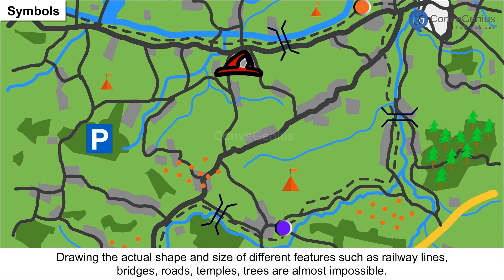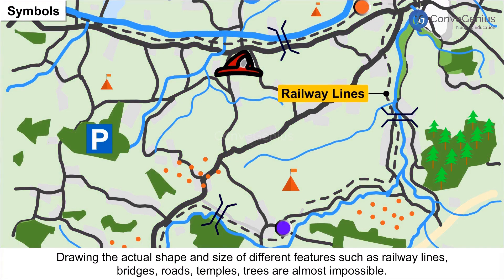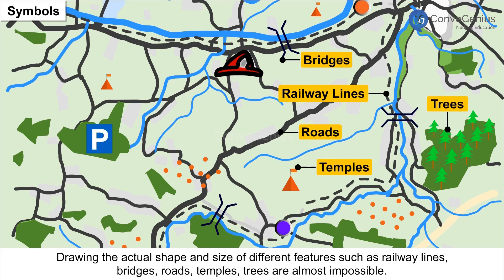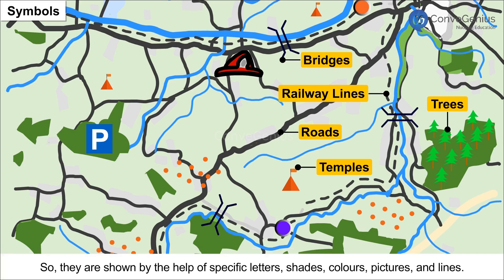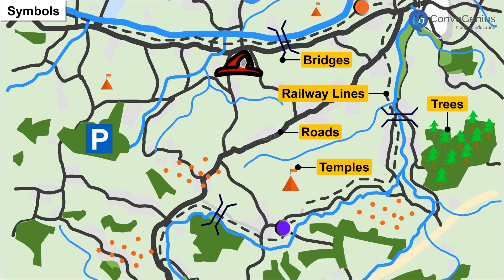Drawing the actual shape and size of different features such as railway lines, bridges, roads, temples, and trees are almost impossible. So they are shown by the help of specific letters, shades, colors, pictures and lines. These symbols are universally accepted and easy to understand for anyone.